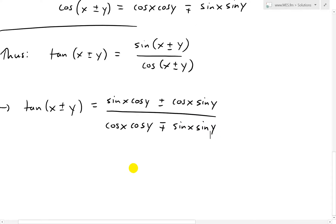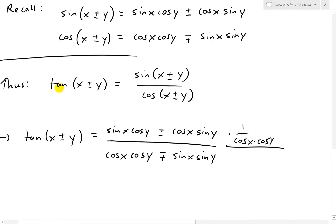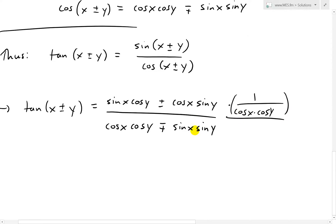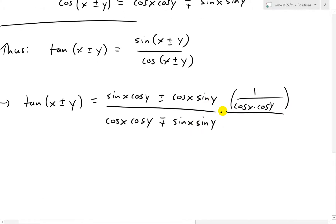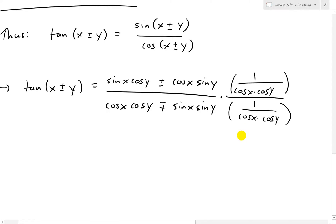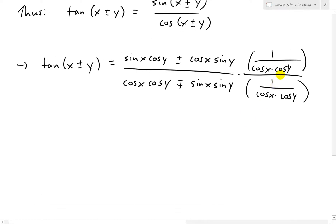Now what we can do is multiply the top and bottom by the same thing. I'm going to write this as multiplying by 1 over cos x cos y. The reason is so that we can start getting tangents in all of these terms — the sine over cosine will form tan, and the cosines will cancel out. We multiply both top and bottom by 1 over cos x cos y, so the ratio is just 1 and it doesn't change the values of anything.